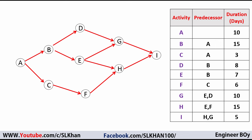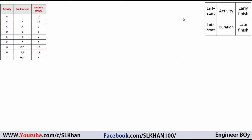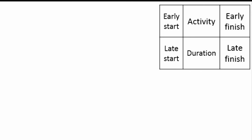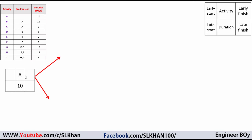This is the node-and-arrow diagram representing the table of activities and predecessors — durations have not been added yet. We'll now work in a box format. Each box has six fields: early start, activity name, and early finish on the top row, and late start, duration, and late finish on the bottom row.